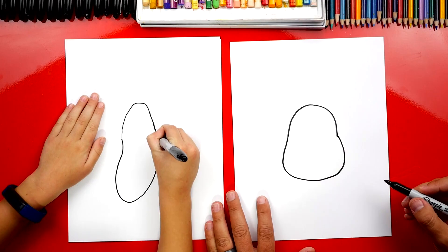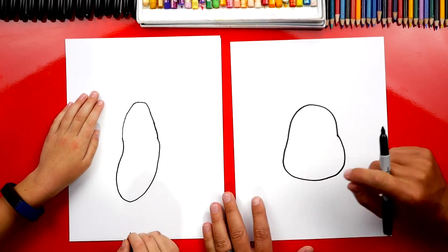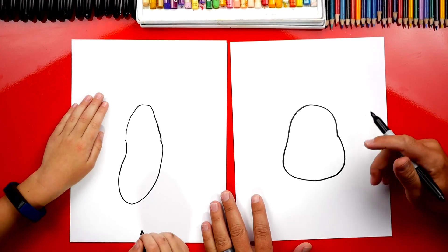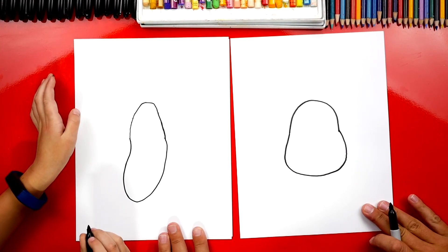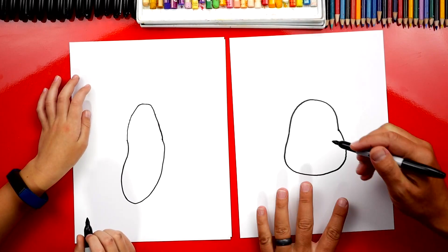You've got the coolest shaped potato ever. Looks like a bean. It looks like a bean and I've seen potatoes that shape so that's perfect. All right dude, we're all done drawing our potatoes. Well we should draw a few more things. Let's draw a funny face, okay?